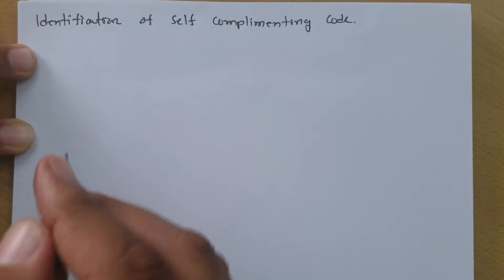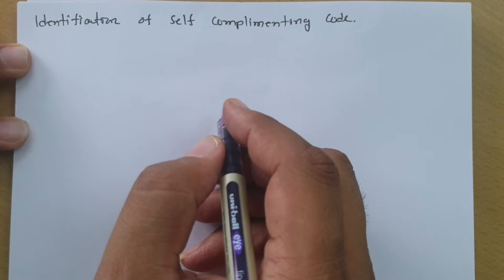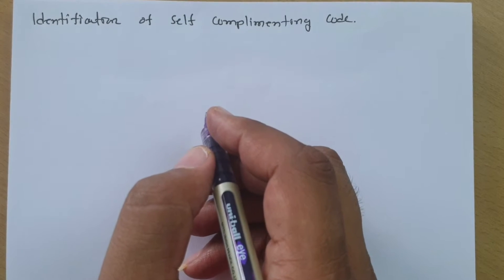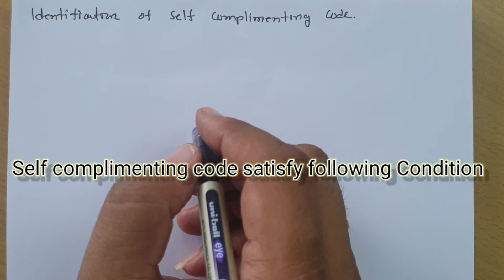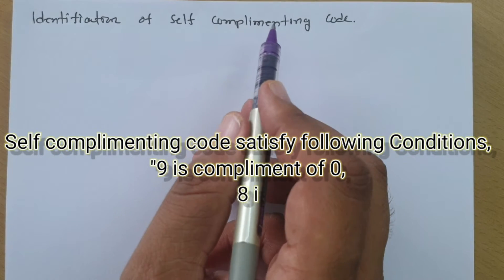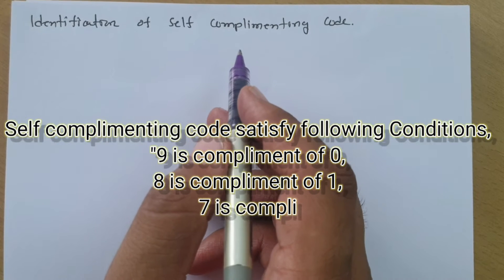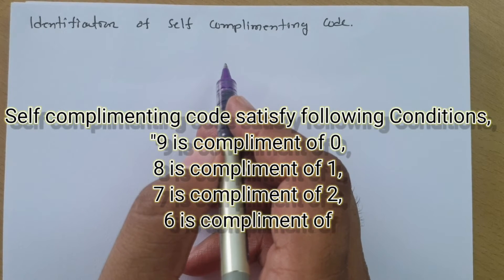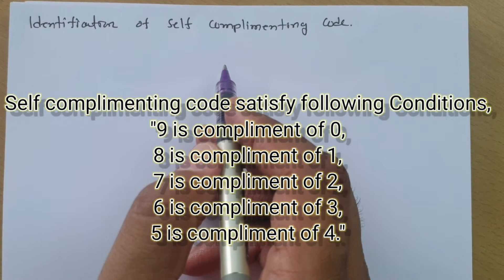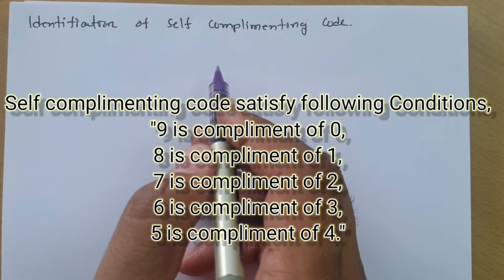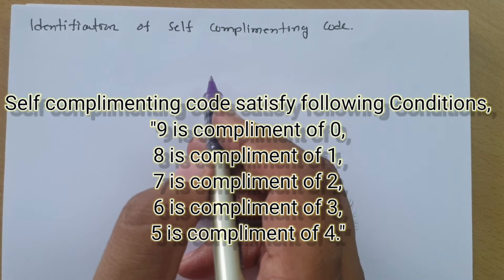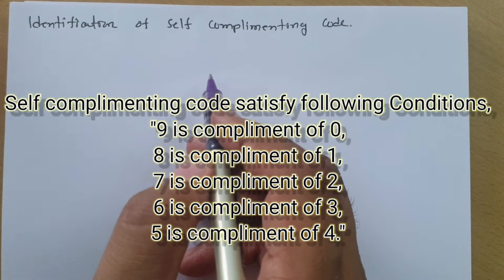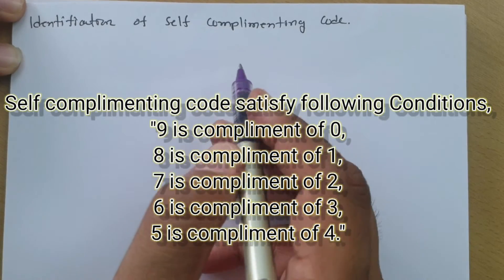I have already explained what is self-complementing code in my previous few classes based on 2421 code as well as XS3 code. The basic definition of self-complementing code explains that if a code satisfies the condition where 9 is the complement of 0, 8 is complement of 1, 7 is complement of 2, 6 is complement of 3, and 5 is complement of 4, then we can say the given code is a self-complementing code.